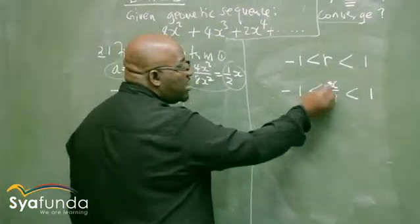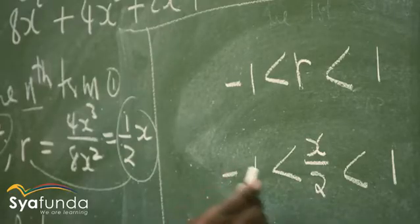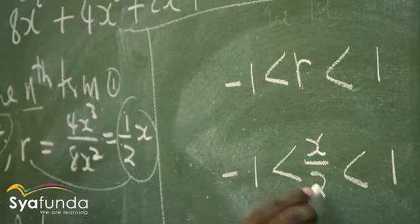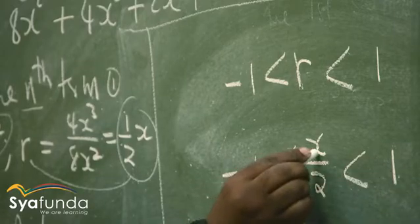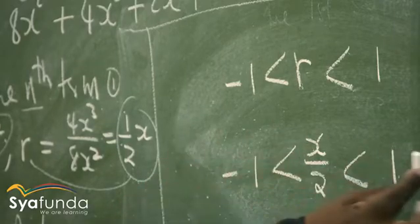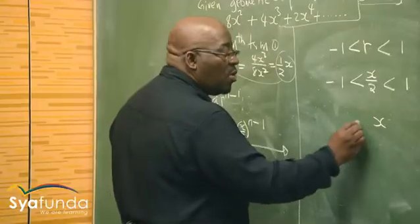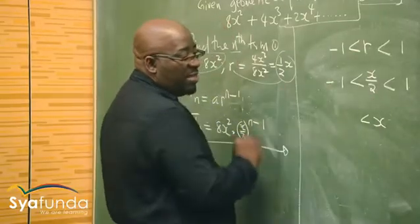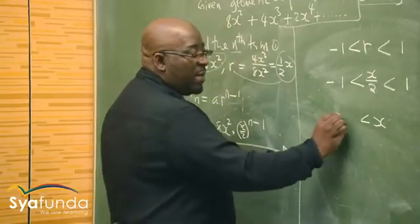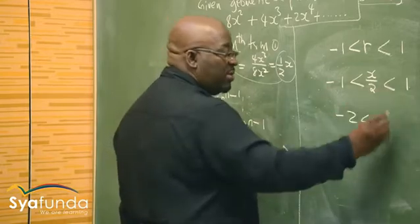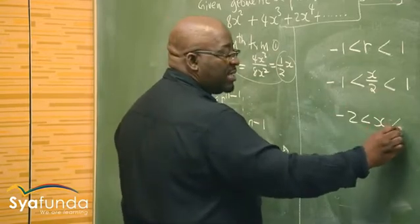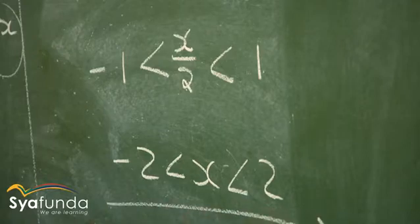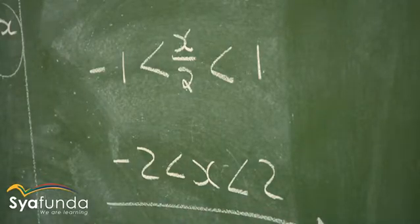How do you get rid of the denominator? You cross multiply. This applies to both sides. To find x, you multiply by 2 on both sides. So x will be greater than minus 1 times 2, which is minus 2, and less than 1 times 2, which is 2. These are the values of x — x can be any value greater than minus 2 but less than 2. That is how you calculate your value of x.